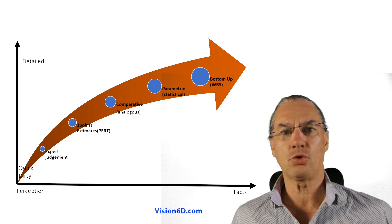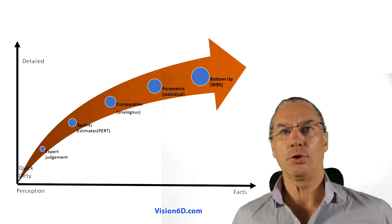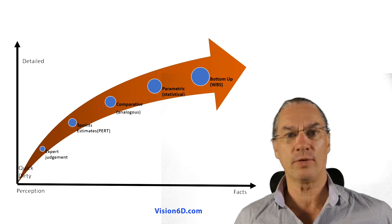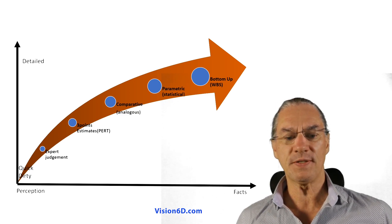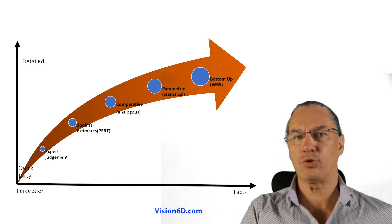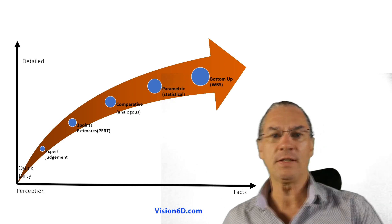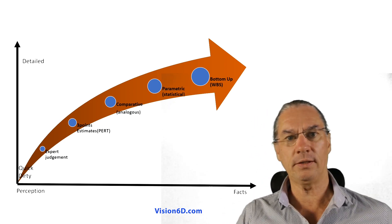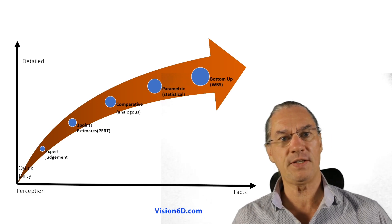Methods are qualified by the perception we have of it. On the x-axis, the horizontal axis, you will see that is the method more the perception, the feeling that we have, or is it more based on facts? So we'll evaluate the method based on this scale.